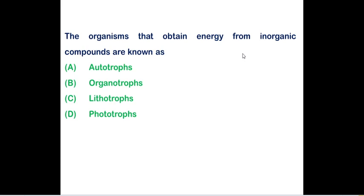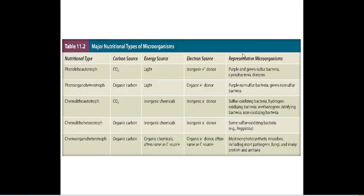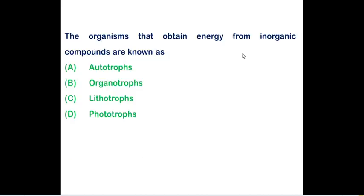Organisms that obtain energy from inorganic compound include lithotrophs. We have discussed in the evolution series. If you know about the thing, you can easily answer this particular question. Autotroph will be obtaining energy from sunlight and organotroph will be obtaining energy from organic compound. Phototroph will be obtaining energy from light.